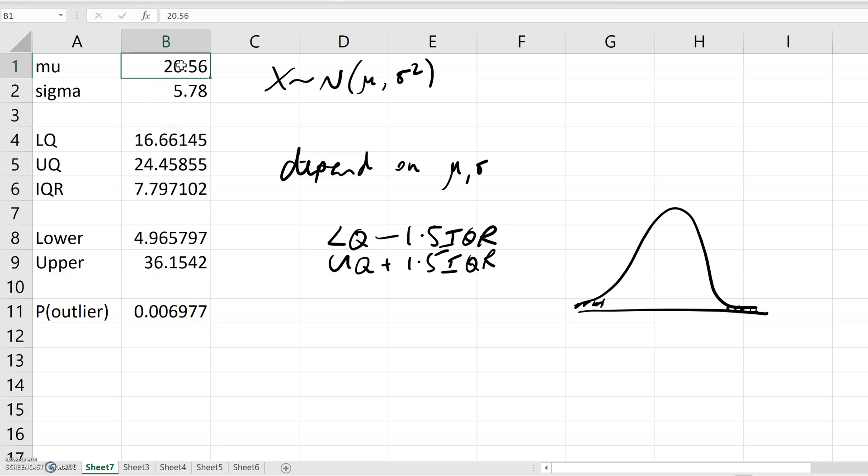Now the cool bit: if I change these numbers, while the quartiles, the interquartile range, the upper and lower thresholds change, the probability of selecting an outlier doesn't change at all. So they're all exactly the same, and completely independent of the parameters of the normal distribution.